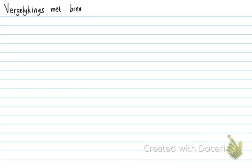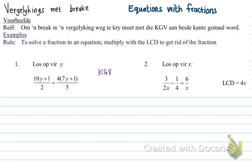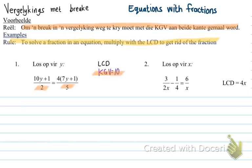Now we are doing equations with fractions. The rule for a fraction in an equation is to multiply by the LCD to get rid of the fraction. The question is to solve for y, number 1. I see I have a fraction, so I find the LCD. The LCD between 5 and 2 is 10. I make both denominators 10 and get rid of the denominator. I'm going to have everything over 10, so I ask myself: what do I multiply 2 with to get to 10?